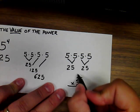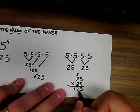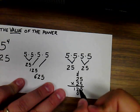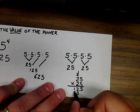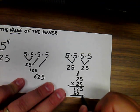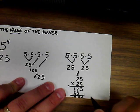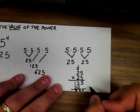5 times 5 is 25, carry the 2. 5 times 2 is 10, plus the 2 is 12. 2 times 5 is 10, carry the 1. 2 times 2 is 4, plus the 1 is 5. When you add that up, you get the same answer of 625.